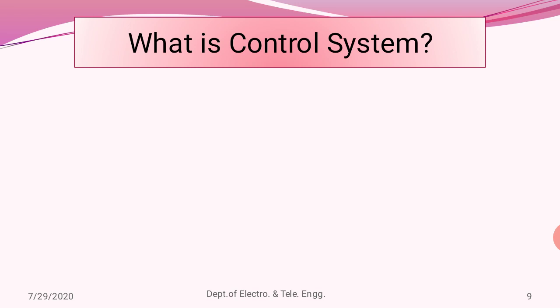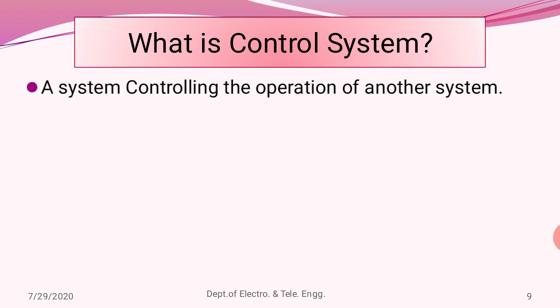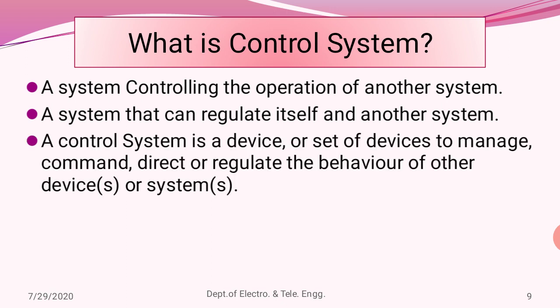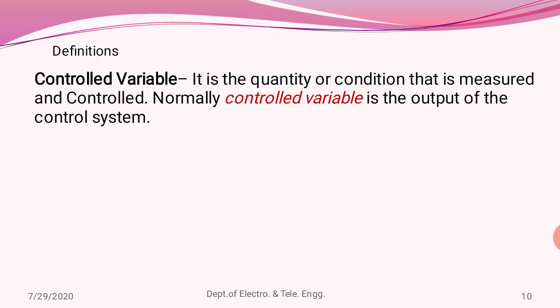Now let us start with the basic introduction and definition of a control system. A control system is essentially a system required for controlling an operation, or we can define it as a system that can regulate itself or another system. Combining all these, a control system is a device or a set of devices whose function is to manage, command, direct, or regulate the behavior of another device or system.